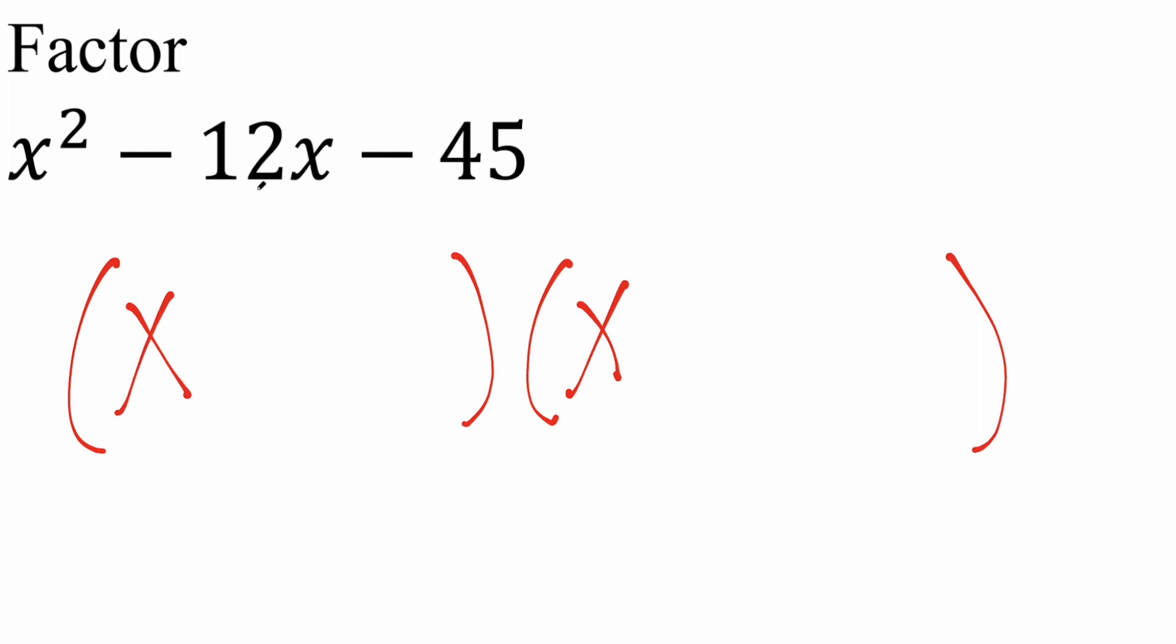You think, how can you get 45? You can get 45 by 9 times 5. But the thing is, not negative 9, negative 5, it's going to be negative 14. It's not going to work. So we try something else.